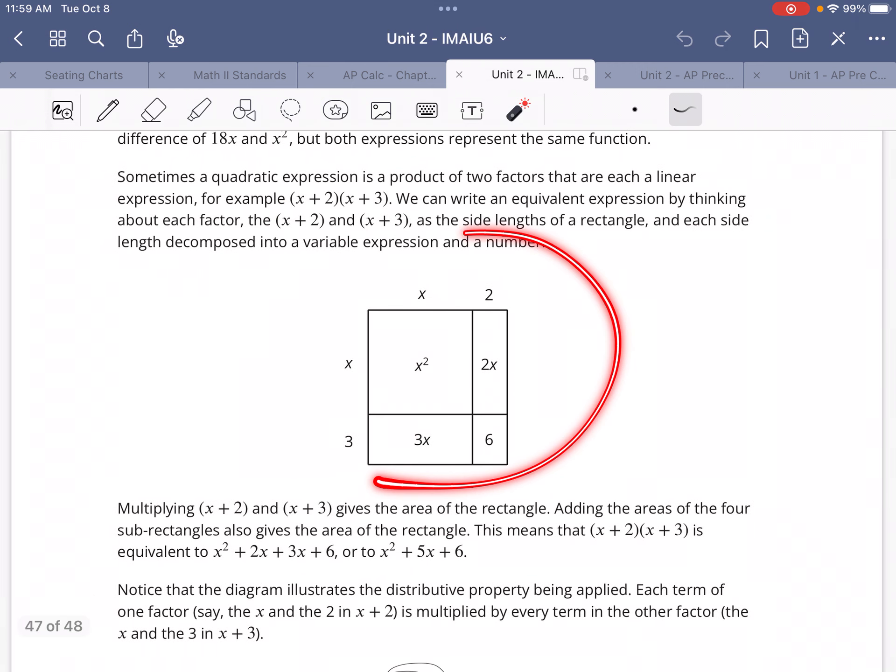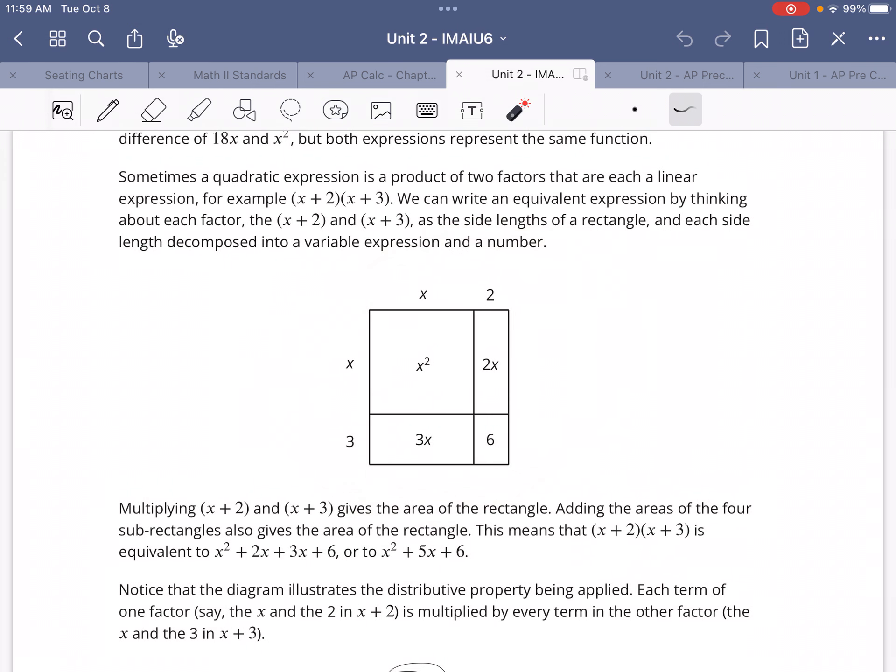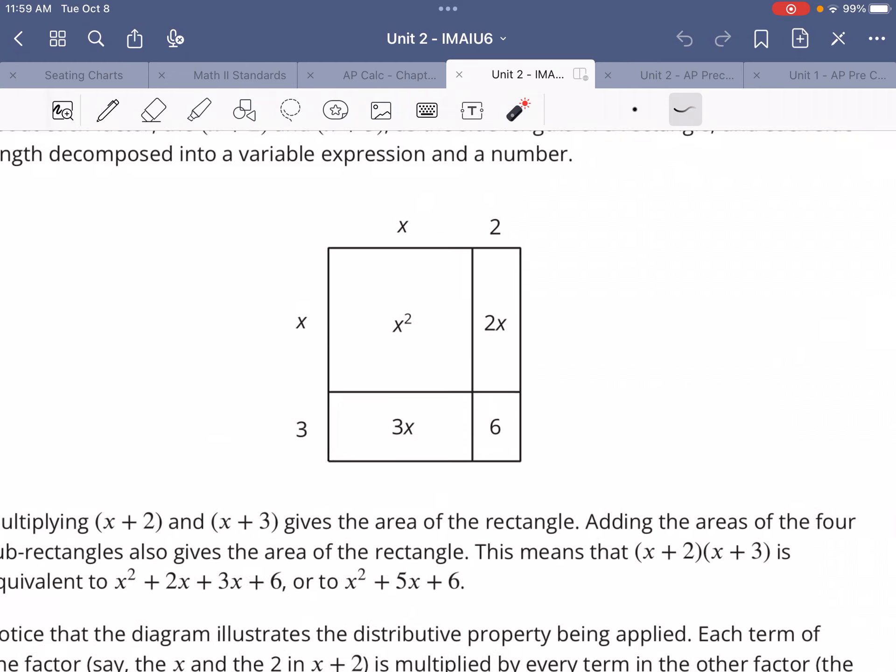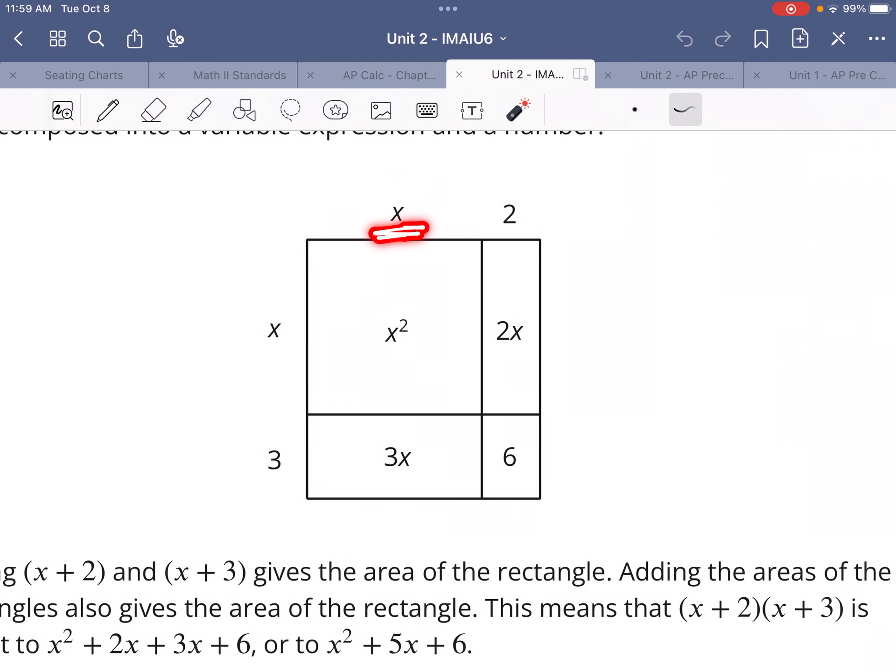Again, you can draw a picture if you need to. This is really helpful sometimes. What we see though, if we don't want to draw a picture or if the picture makes sense and you want to move on, what's happening in this diagram is we take x times x and x times 3, and then we take 2 times x and 2 times 3 to get each of these areas.